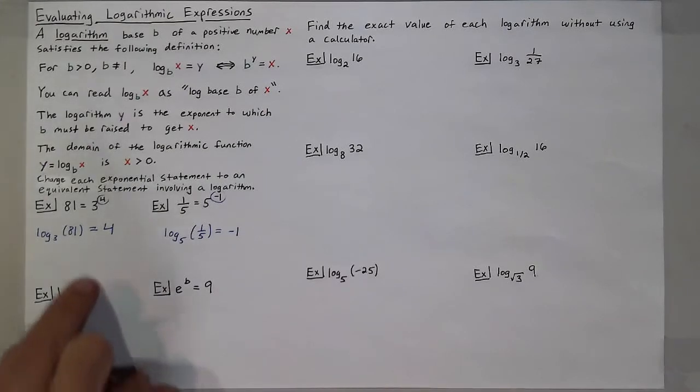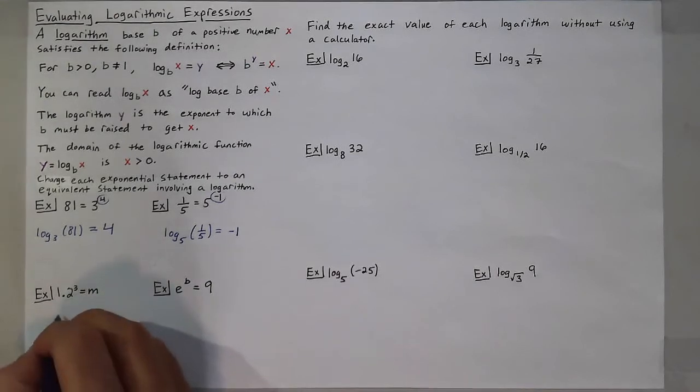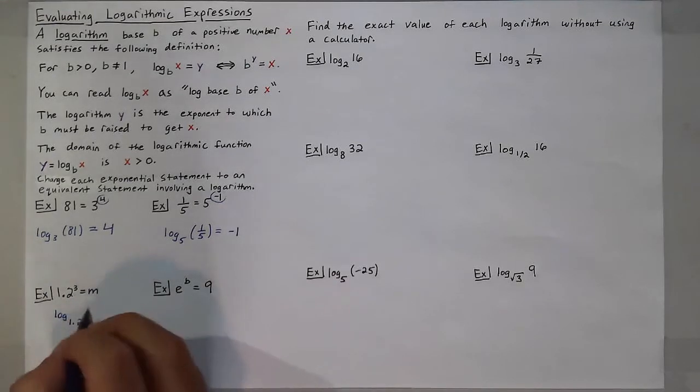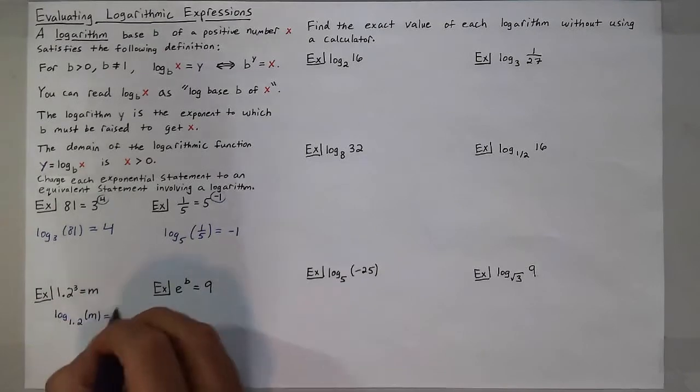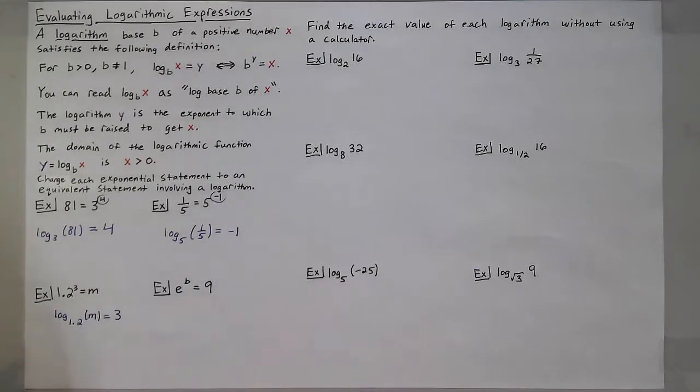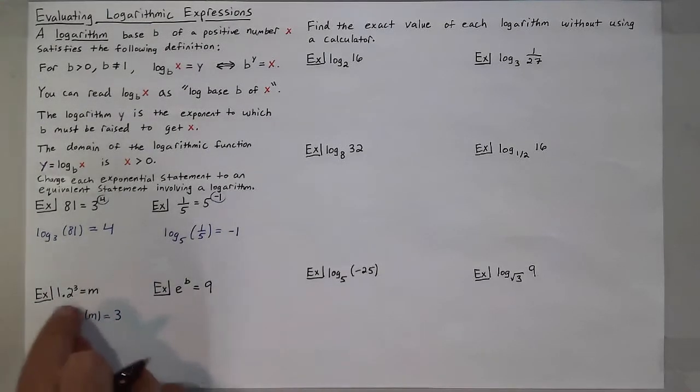So if I were to rewrite this statement, 1.2 cubed is equal to m, that would be written as log base 1.2 of m is equal to 3. Because this number here, log base 1.2 of m is the power I raise 1.2 to to get m, which happens to be 3.